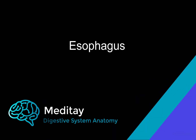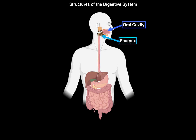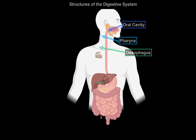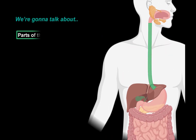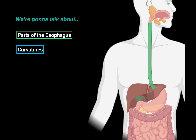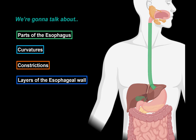What's up? Medite here. In this video, we're going to go through the anatomy of the esophagus. In the last video, we went through the anatomy of the pharynx. Now the next step after the pharynx is the esophagus, as you see here. In this video, we're first going to look at the parts of the esophagus, then the curvatures and constrictions, and then the layers of the esophageal wall through a histology slide.